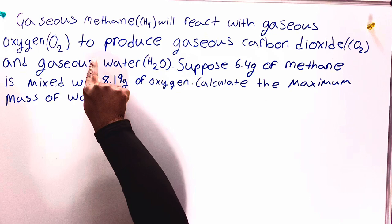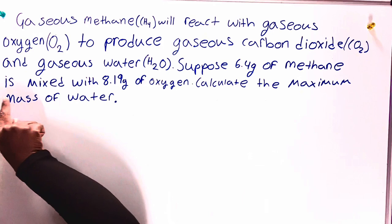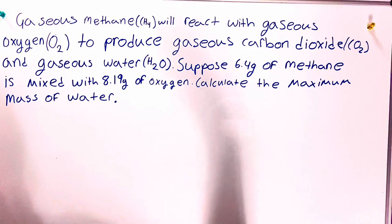We have gaseous methane will react with gaseous oxygen to produce gaseous carbon dioxide and gaseous water, H2O. Suppose 6.4 grams of methane is mixed with 8.19 grams of oxygen. Calculate the maximum mass of water.